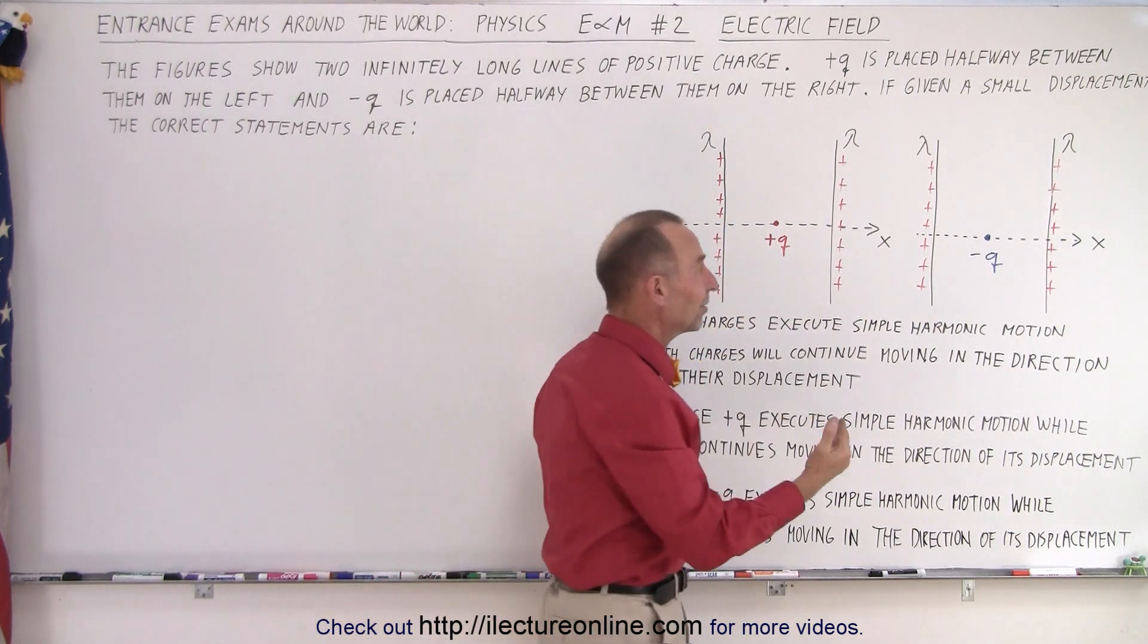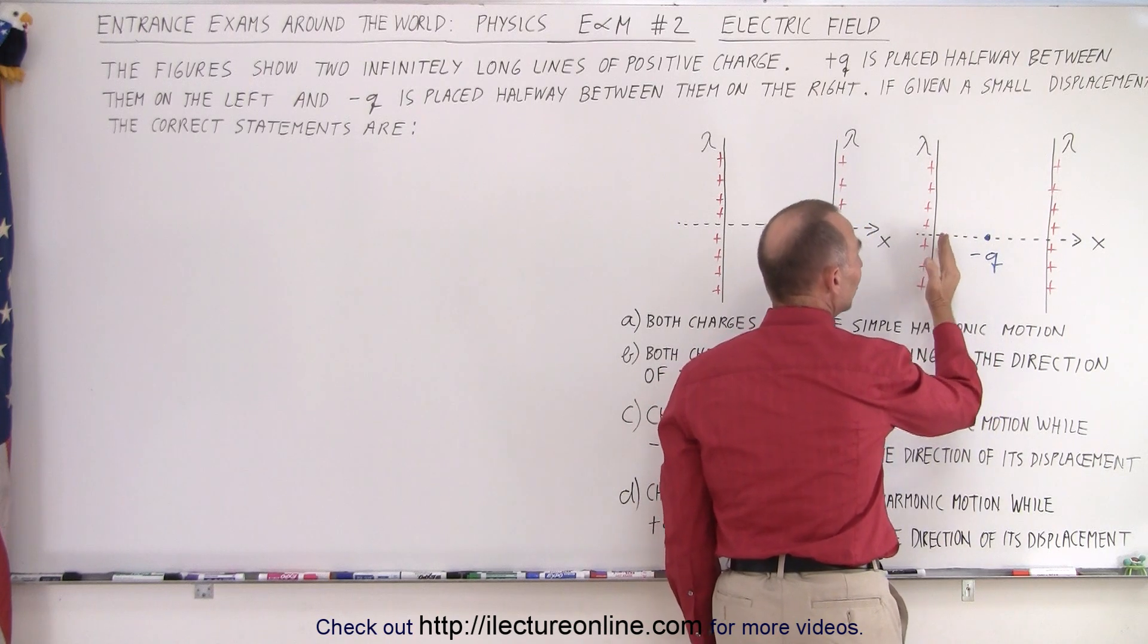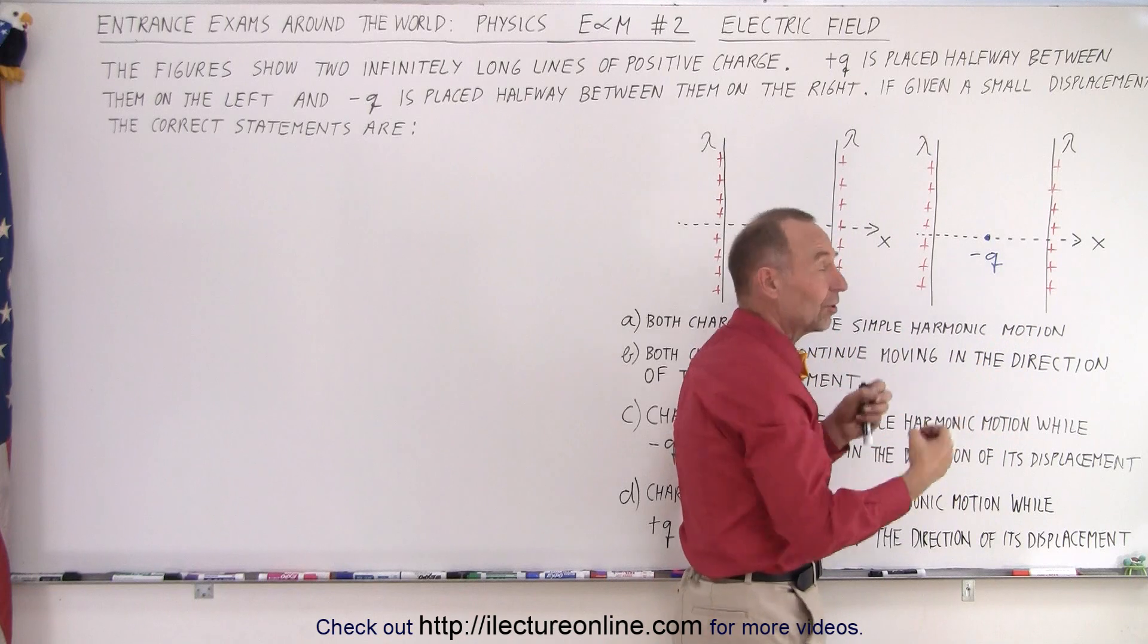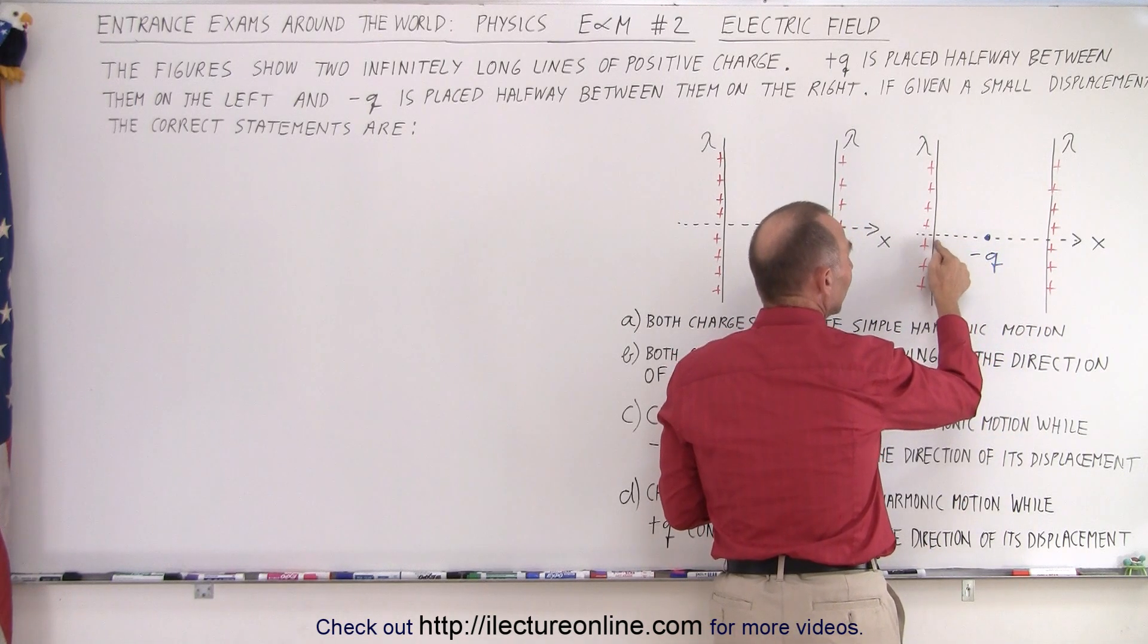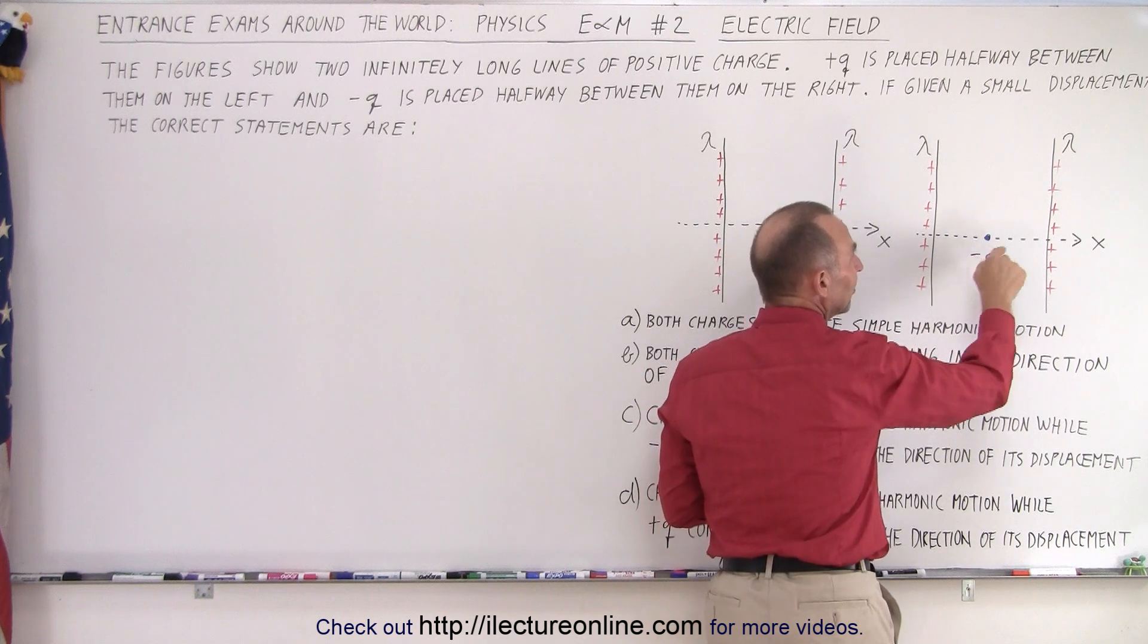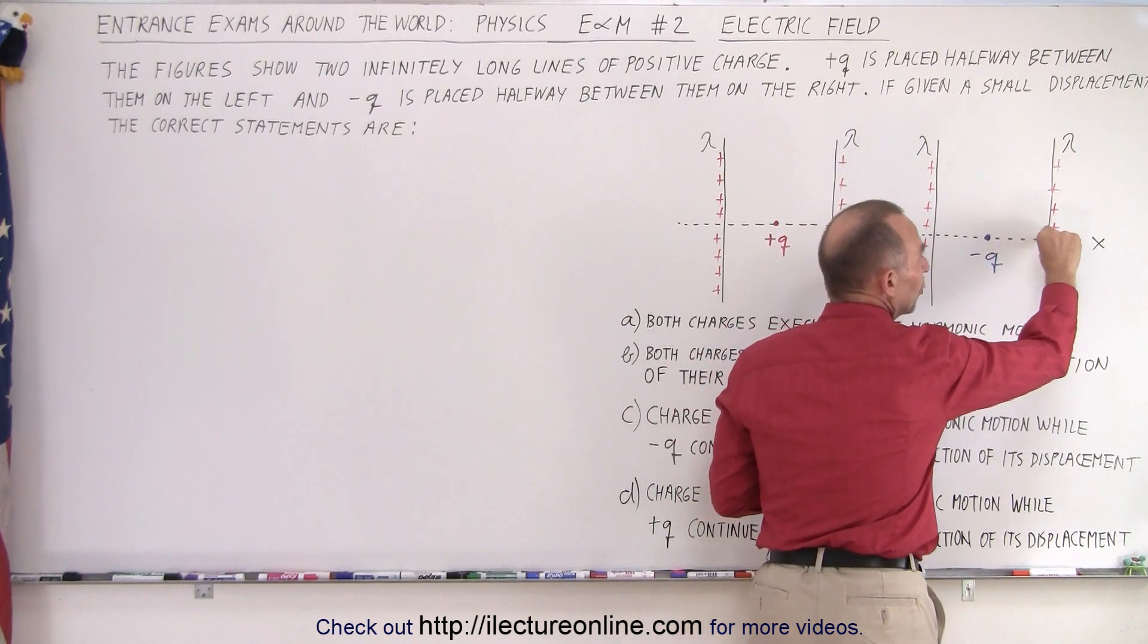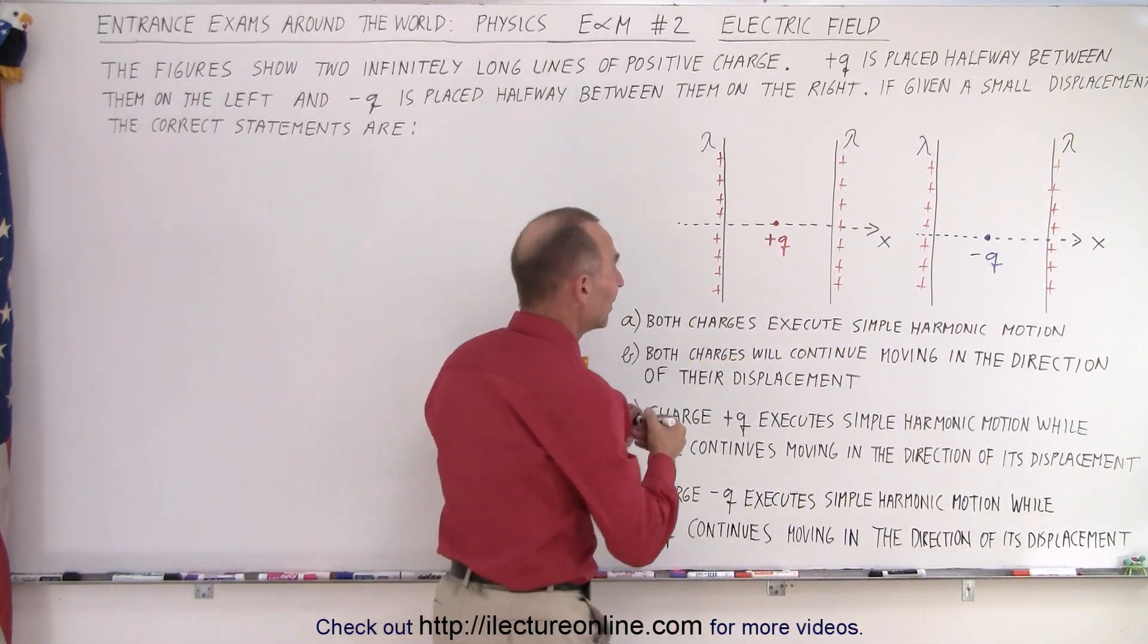What about on the right side? Notice that this charge is being attracted by the left and attracted by the right, so it is pulling in equal direction on both sides. But when you move it just slightly in one direction, it will be attracted more on the left than on the right and will continue to move in that direction. If you push it to the right, it will be attracted more on the right than on the left, and the right charge will continue to move until it reaches the line charge.